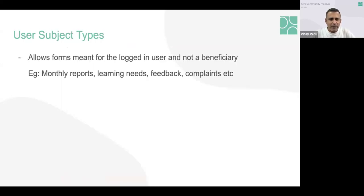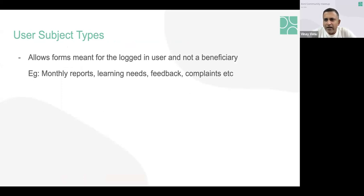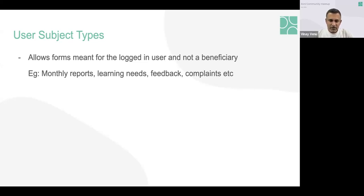The last piece is user subject types. Previously, field users who wanted to fill in forms for themselves — like a monthly report or a feedback or complaint — had no direct way to do it. The workaround of creating specific subject types caused problems where one person's records would go to another person's phone when they shared the same catchment. Now there's a mechanism to fill in user-specific forms — users can submit feedback and complaints that are just for themselves, not tied to a beneficiary. This feature has gone live and can be used.